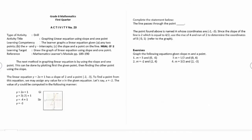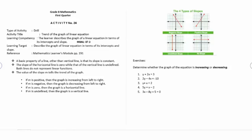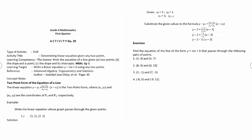Activity number twenty-three is graphing linear equations using slope and one point. Activity number twenty-four is identifying the trend of the graph of a linear equation. Activity number twenty-five is determining the linear equation given any two points.